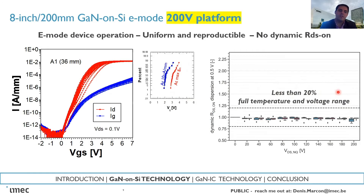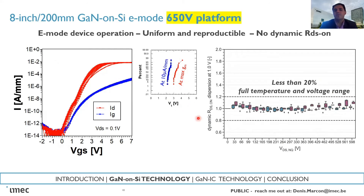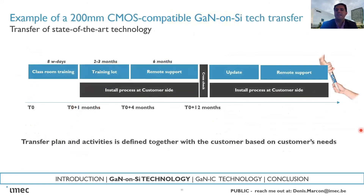For the 650 volt technology, you can see the same characteristics: at VGS = 0 there is no current, the threshold voltage is well distributed over the wafer at around 3 volts, and the dynamic Ron is less than 20 percent up to 600 volt and up to 150 degrees C. This is a technology that is reproducible, uniform, and can be transferred to any 8-inch line.